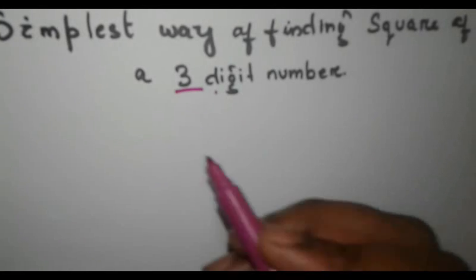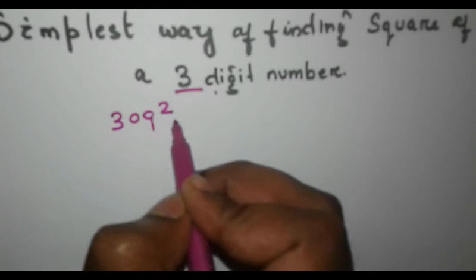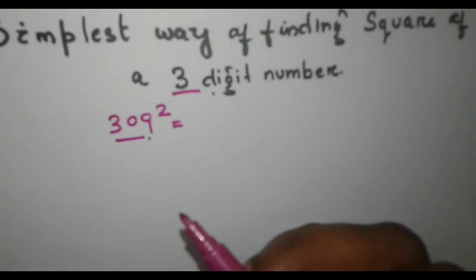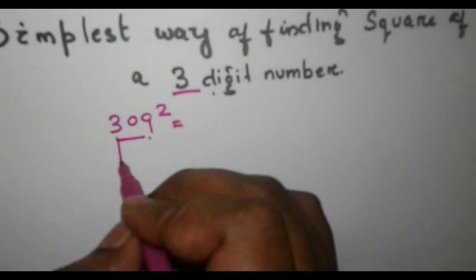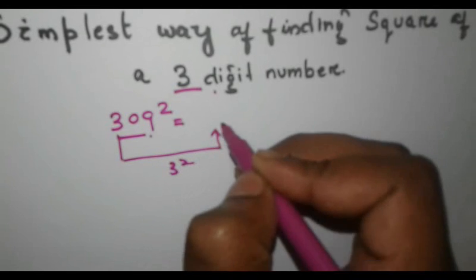To start with an example, let me take 309 square. So we have to find the square of 309. First, you take 3 and square it and write it over here. So 3 square is 9.